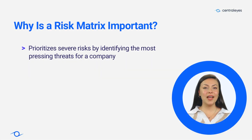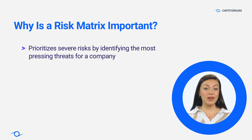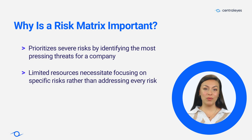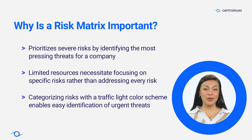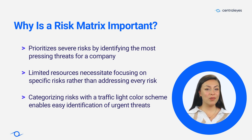A risk matrix helps prioritize the most severe risks faced by a company, considering that resources are limited and not all risks can be addressed. Categorizing risks using a traffic light color scheme on the matrix allows for easy identification of the most urgent threats, enabling focused attention on them. Ultimately, organizations need to accept a certain level of risk to achieve success.